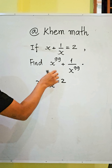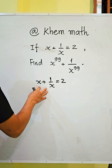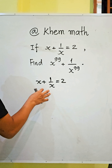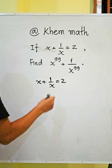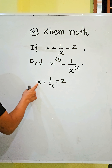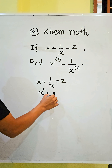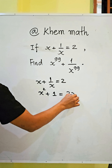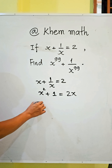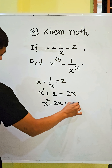The first step is to take the common denominator, which is h. We multiply both sides of the equation by h, so h times h gives us h squared plus h equals 2h. We then move 2h from the right-hand side to the left-hand side, giving us h squared minus 2h plus 1 equals 0.